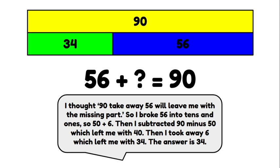I thought 90 take away 56 will leave me with the missing part. So I broke 56 into tens and ones, 50 plus 6. Then I subtracted 90 minus 50, which left me with 40. Then I took away 6, which left me with 34. So the answer is 34.